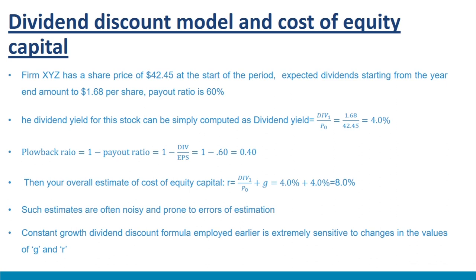The constant growth dividend discount formula is extremely sensitive to changes in G and R. Before applying this formula, one should ensure that current high rates of growth are not assumed to be sustainable in the long term, as the formula assumes growth rate G continues in perpetuity. Organizations often witness periods of high growth due to favorable operating environments; however, these high growth rates are not sustainable in the long term. Therefore, the assumption of long-term growth G needs to be made with caution.